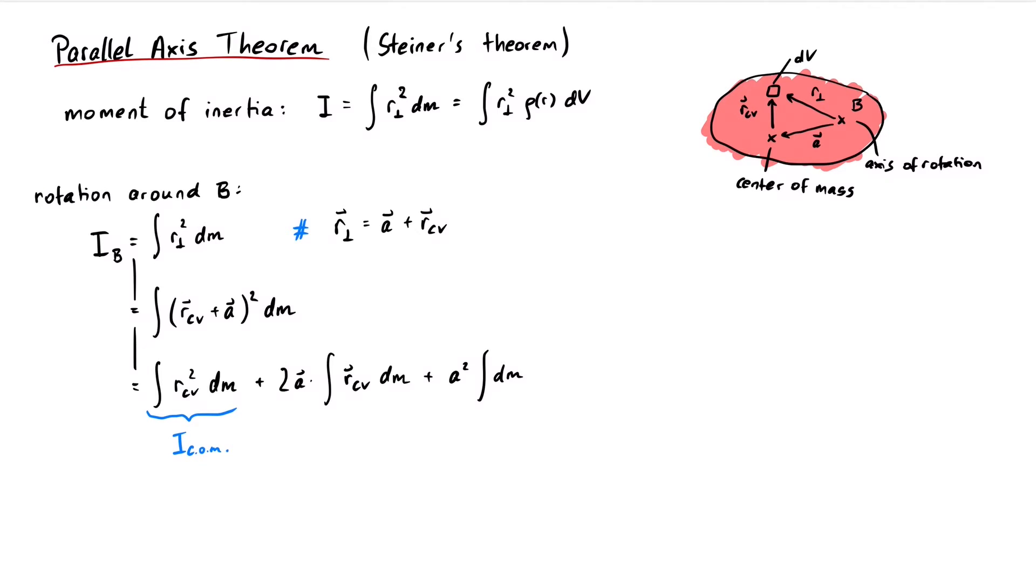For the second term, we can recognize the definition for the center of mass position. But since the origin of the coordinate system for r cv lies on the center of mass, remember r cv starts from the center of mass, therefore this is its origin, we get the vector 0 0 0. And for the last term, the integral over the density is just the total mass of the object.